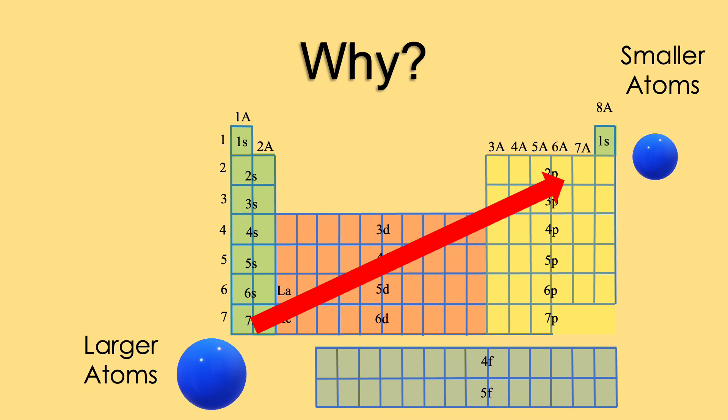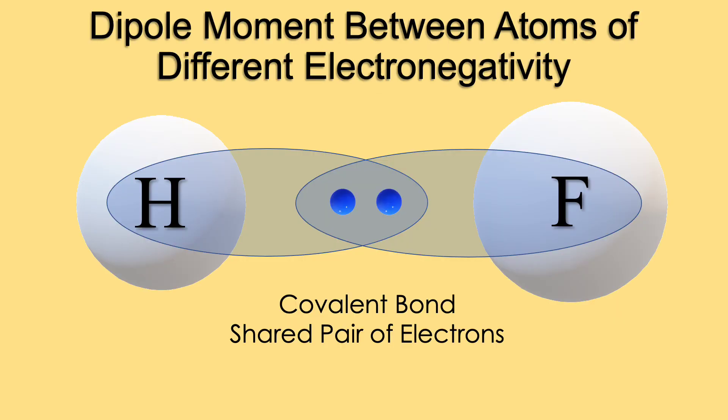So why are differences in electronegativity important? Let's take the example of hydrogen fluoride, HF. Fluorine is farther to the right on the periodic table than hydrogen and more electronegative. There is a difference in electronegativity.